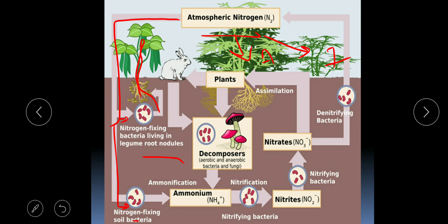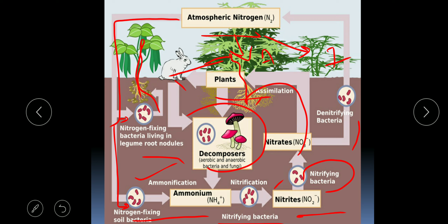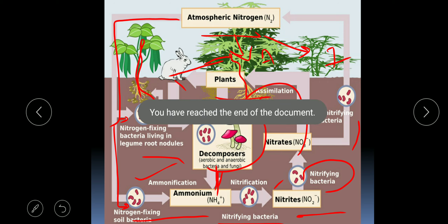When free-living nitrogen-fixing bacteria like Azotobacter convert nitrogen into ammonia, that process is ammonification. Then ammonia is converted into nitrites — this is nitrification, carried out by nitrifying bacteria. Nitrites are then converted into nitrates by nitrifying bacteria. Nitrates in the soil can be converted back into atmospheric nitrogen by denitrifying bacteria. When nitrates are absorbed by the roots of the plant and utilized by living tissues, that is known as assimilation. When decomposer bacteria convert the dead remains of plants and animals back to ammonia, that is ammonification. Thank you everyone.